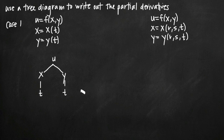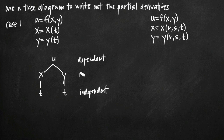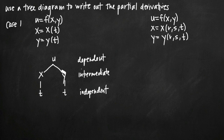The lowest level of the tree is the independent variable. The highest level, u, is the dependent variable. Anything in between is an intermediate variable that allows you to put the dependent variable in terms of the independent variable. Notice that we don't have a direct relationship between u and t — we only have u in terms of x and y, and then x and y in terms of t. So we really have to go through x and y to get from u to t.